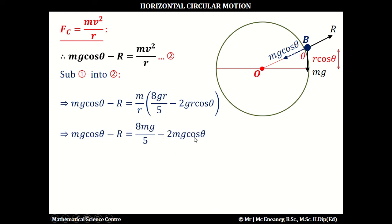If we bring Mg cos theta across and subtract, minus R equals 8mg over 5 minus 3mg cos theta. Changing the signs, R equals 3mg cos theta minus 8mg over 5.